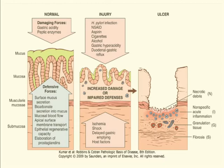In this image we can see the normal, the injured, and the ulcer-formed mucosa. In the normal mucosa there are damaging forces, but in opposition to those there are defensive forces as well. The damaging forces include gastric acidity and peptic enzymes, while the defensive forces like surface mucus secretion, bicarbonate secretion, mucosal blood flow, etc., protect it from the damaging factors.